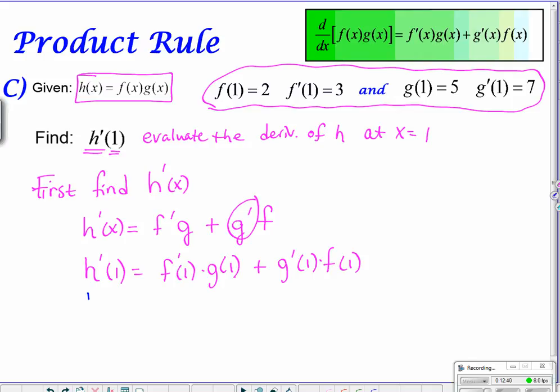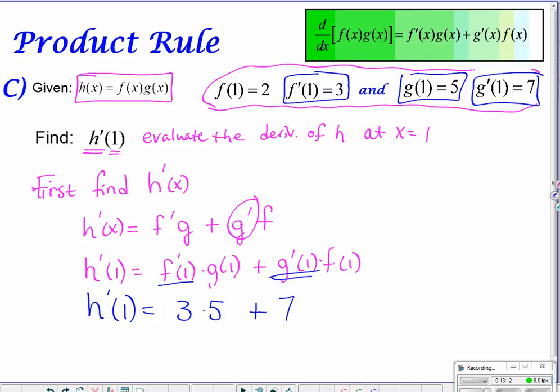So, final answer here. f prime of 1 is right here. It is 3. g of 1 is right there, a 7. Oh, I'm sorry. Grabbed the wrong one. We wanted just g of 1, which is 5. Notice my mistake when I came to this next one. I need g prime, and now that's the 7. And then back to f of 1. f of 1 is located right there. It is 2, giving us 15 plus 14 makes 29. And 29 is our answer.